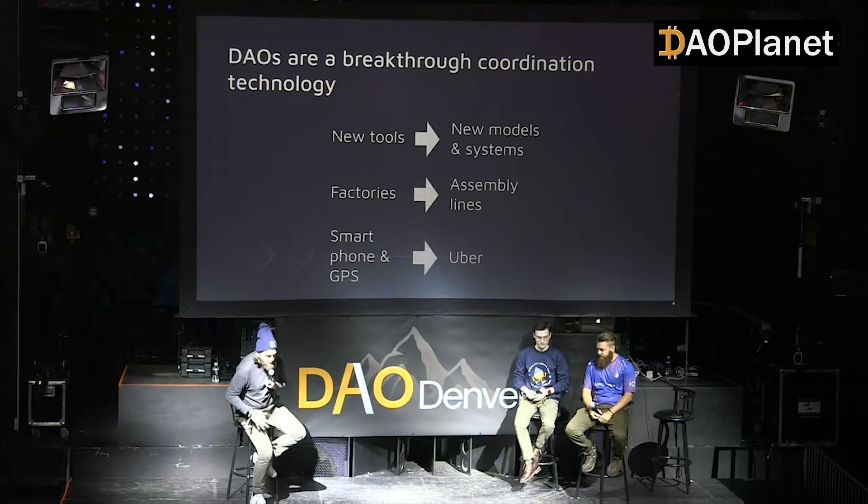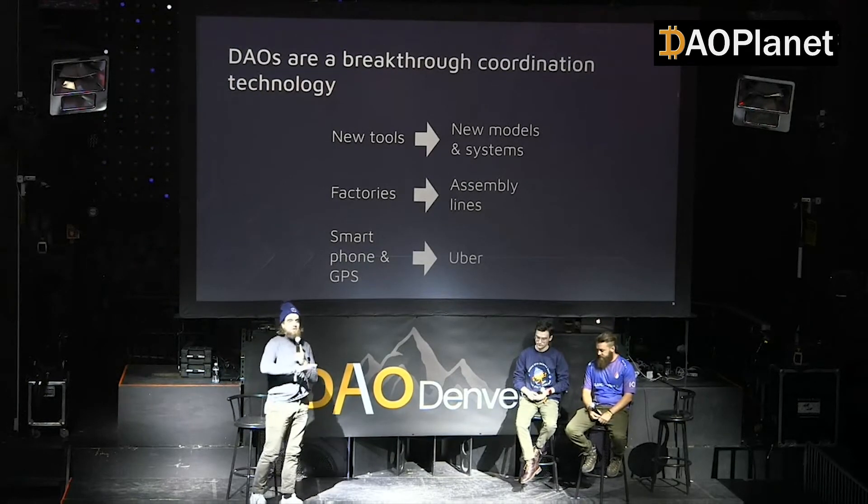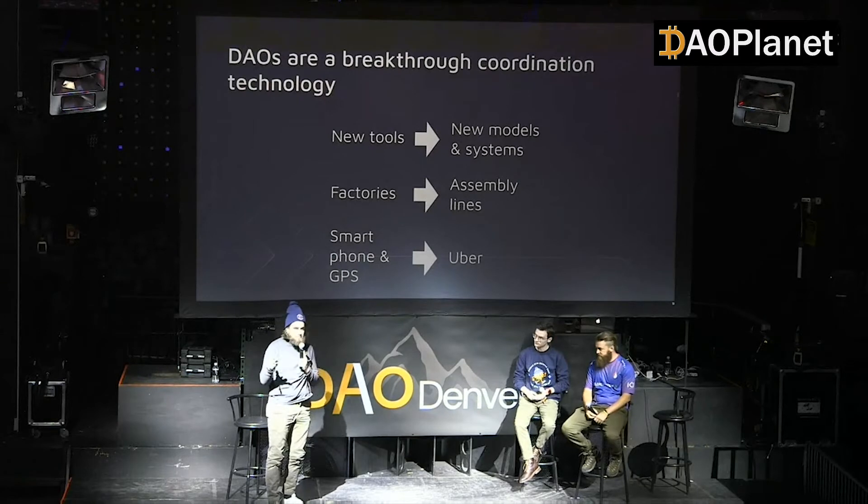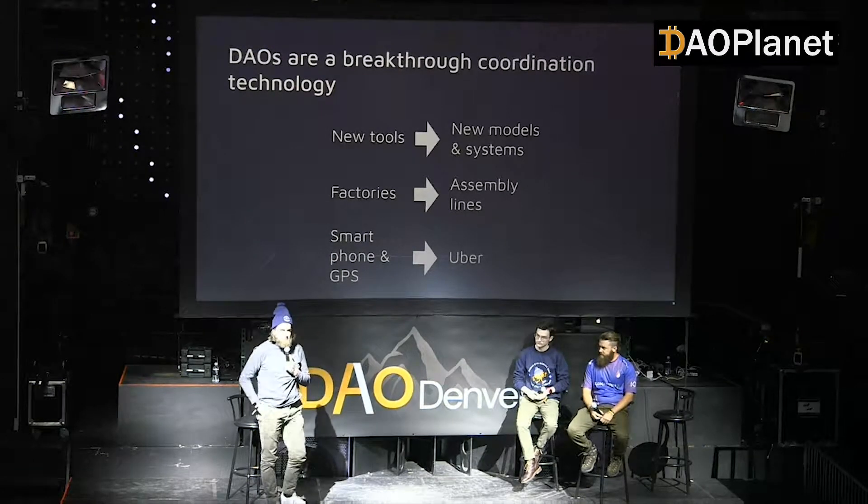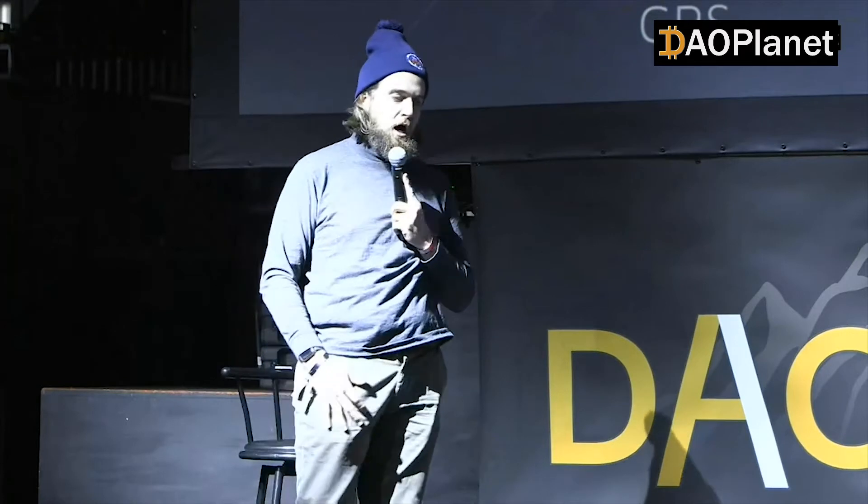Once you have a new technological tool — say, the factory — you have the ability to produce things, but you don't actually see the model or system for maximizing that productivity for several years. The same thing happened with the smartphone and GPS: then you could create new relationships with customers, like Uber did.